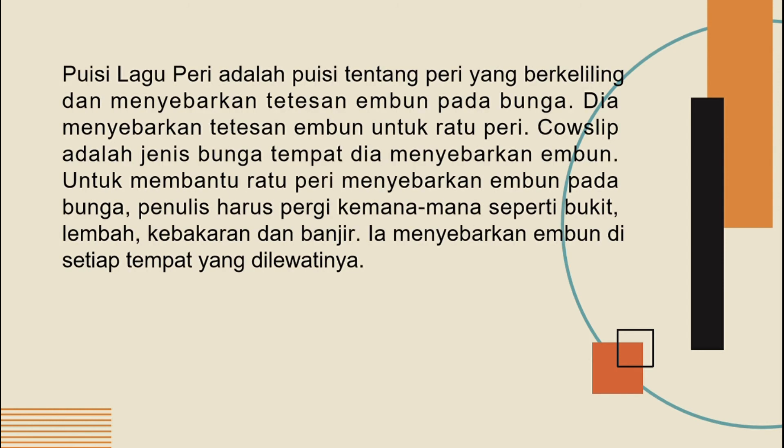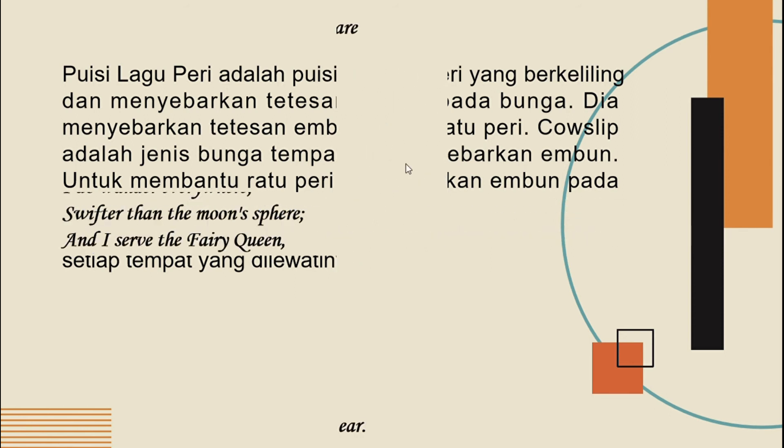Puisi peri ini adalah puisi tentang peri yang berkeliling dan menyebarkan tetesan embun pada bunga. Dia menyebarkan tetesan embun untuk ratu peri. Cowslip adalah jenis bunga tempat dia menyebarkan embun. Untuk membantu ratu peri, penulis harus pergi kemana-mana seperti bukit, lembah, kebakaran, dan banjir. Ia menyebarkan embun di setiap tempat yang dilewatinya. Jadi untuk memahaminya harus dibaca berulang-ulang kali.